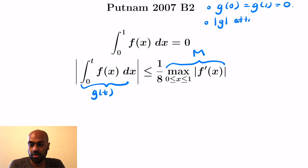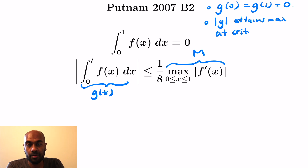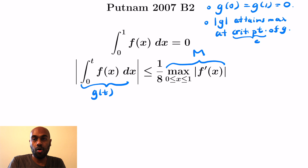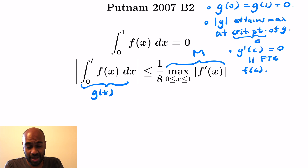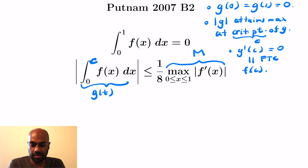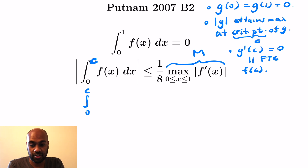We have this function that's 0 at 0 and 0 at 1, and we're trying to find the maximum of the absolute value of g. The maximum, since the absolute value at 0 and 1 is 0, occurs at a critical point, which we'll call c. A critical point has the derivative equal to 0, and the derivative of g by the fundamental theorem of calculus is f at c. So we're trying to show that the absolute value of the integral from 0 to c of f of x dx is bounded above by one-eighth M.